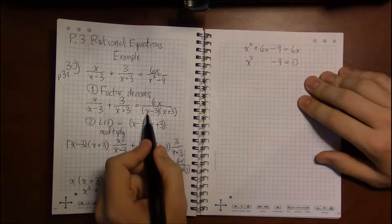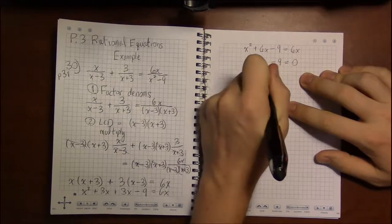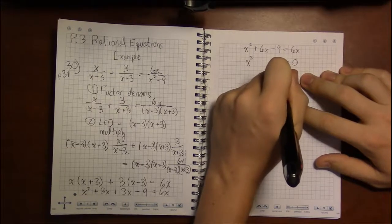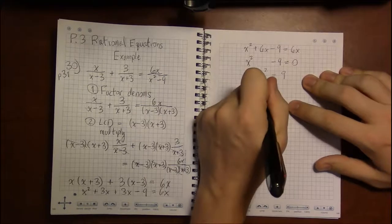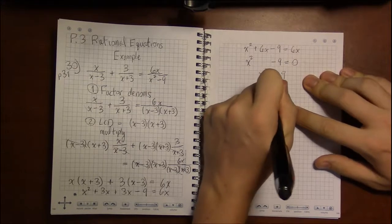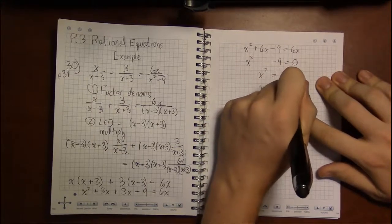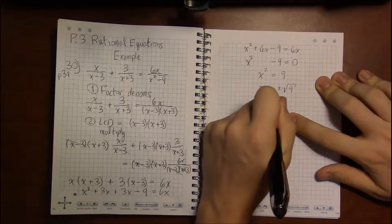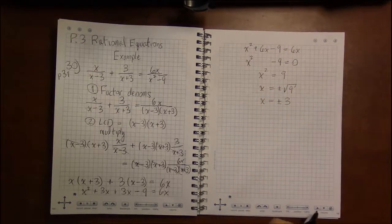So we just have x squared minus 9. Now, you can factor it again like we just did here. Or you can move the 9, the minus 9, add 9 to both sides to get x squared equals 9, take square roots, leaving you with x equals plus or minus square root of 9. And square root of 9 is 3. So we have x equals plus or minus 3.